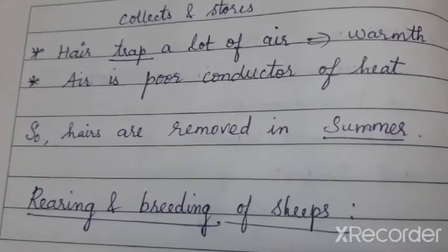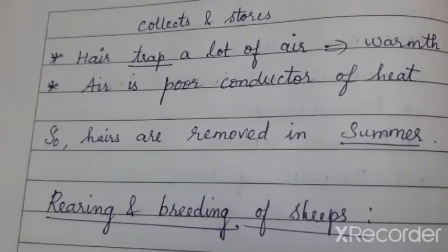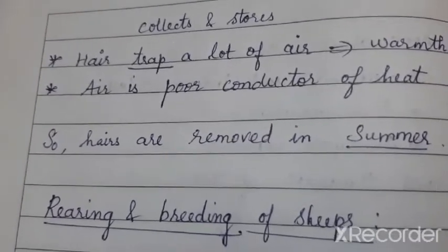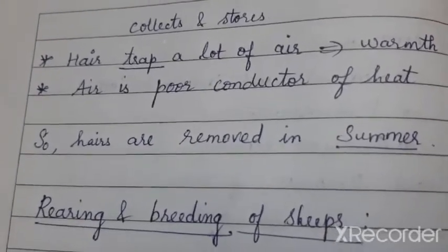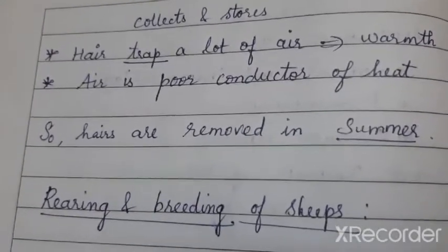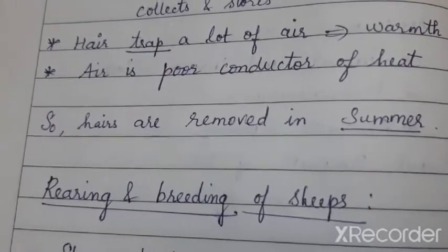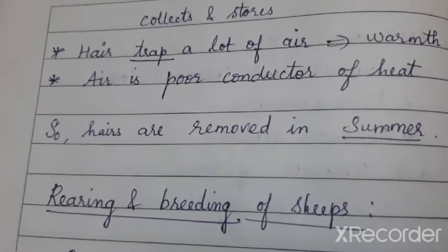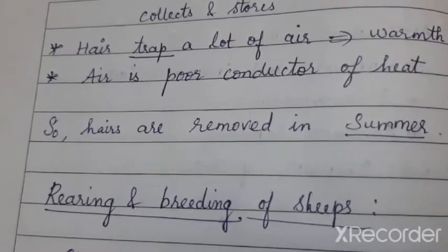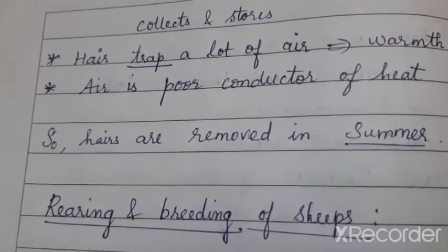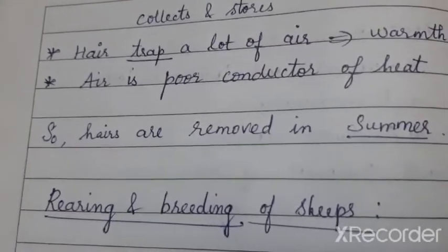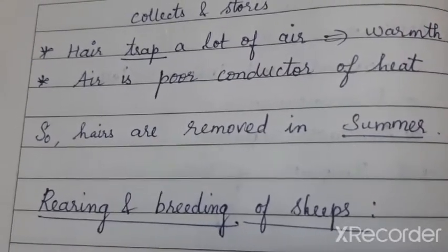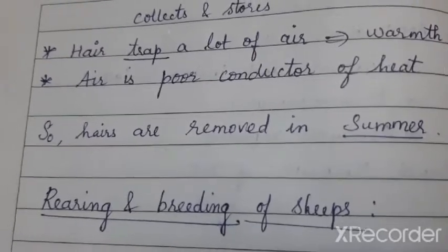The hair on the animal's body traps a lot of air — it collects and stores air inside the hair layers. The air around us is collected by the hair and stored inside. Since air is a poor conductor of heat, which means it does not conduct heat well, the warmth is retained. Air does not produce or spread heat — just as fire from a candle or campfire does not make the surrounding air catch fire. So air is a poor conductor of heat.